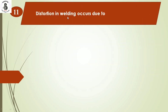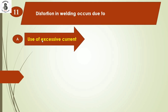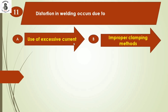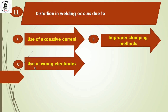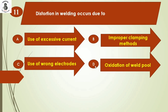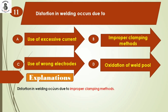Distortion in welding occurs due to: Option A: use of excessive current. Option B: improper clamping methods. Option C: use of wrong electrodes. Option D: oxidation of weld pool. Distortion in welding occurs due to improper clamping methods. So the right answer is option B.